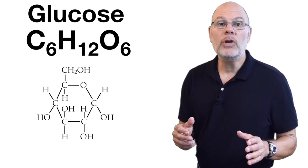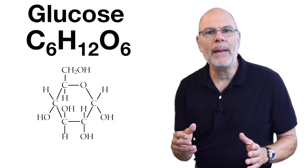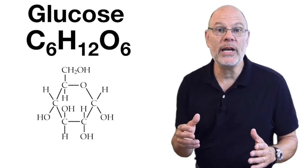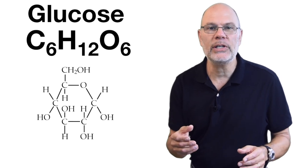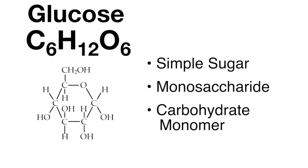Here's one carbohydrate monomer. It's called glucose, C6H12O6. It's made by plants, algae, and photosynthetic bacteria during photosynthesis. Glucose is a simple sugar, or a monosaccharide, and monosaccharides are the monomers of carbohydrates.